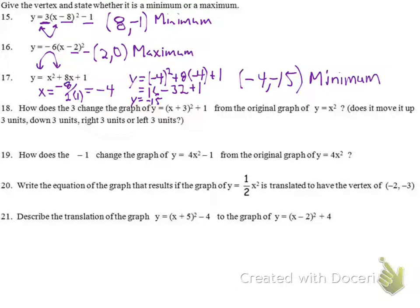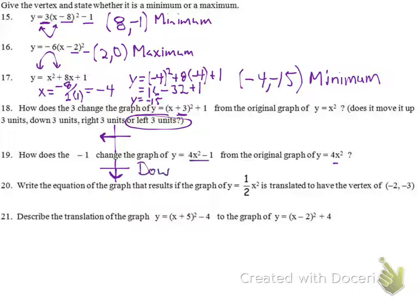Number 18 asks how the 3 changes the graph of y equals x plus 3 squared plus 1 when we started with y equals x squared. The 3 is on the inside, so it's part of our x value. Since we add 3, it actually moves negative 3, so we move it left 3 units. For number 19, going from 4x squared to 4x squared minus 1 moves the vertex down 1 unit, from 0, 0 to 0, negative 1.